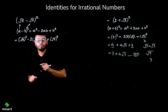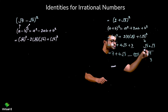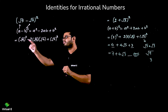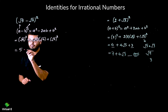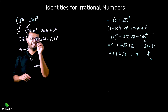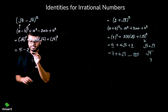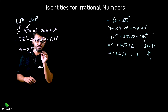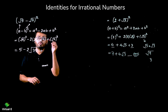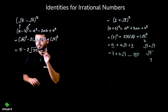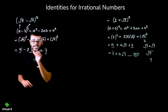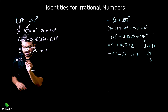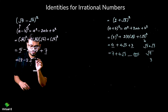Now remember, (√5)² = 5 — don't write 25. Minus 2, and multiplying √5 and √7 gives √(5×7) = √35. And (√7)² = 7. So 5 and 7 can be added like previously. 5 + 7 = 12, and we have minus 2√35.